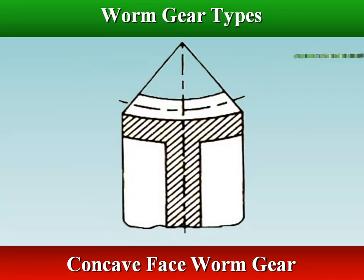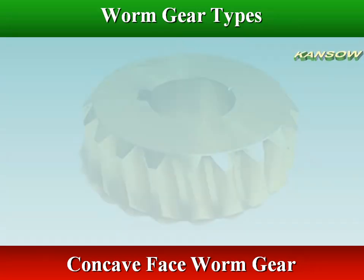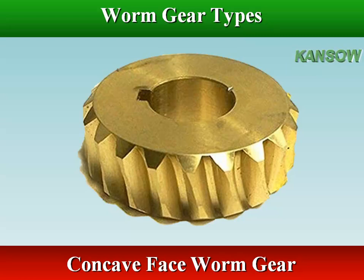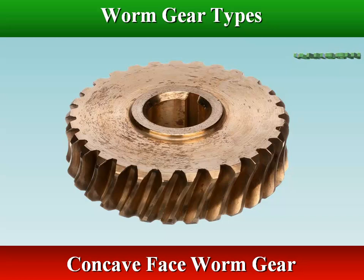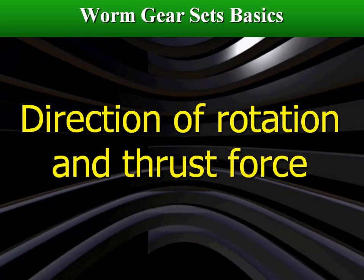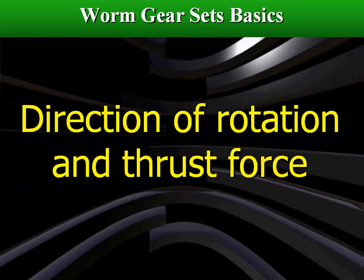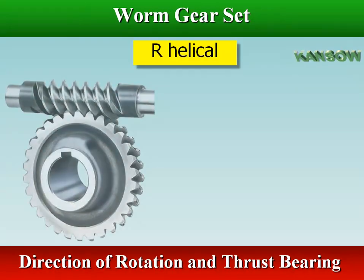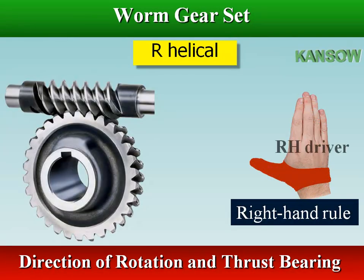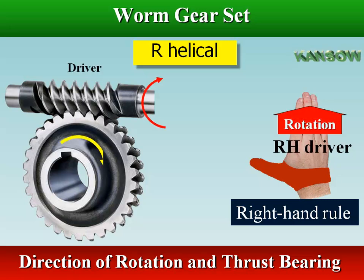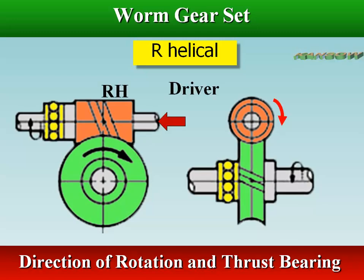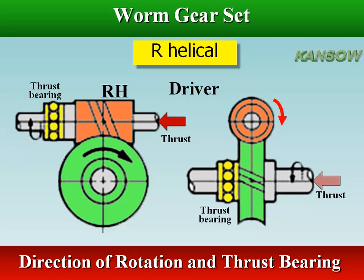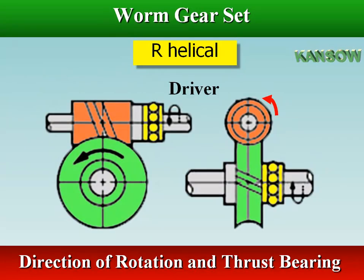The concave-face worm gear is the accepted standard form and is used for all heavy service and general industrial uses. The teeth are cut with a hob of the same pitch diameter as the mating worm to increase the contact area. Because of the helix of the gear teeth, worms and worm wheels produce axial thrust forces; the directions of thrust depend on the hand of the helix and the direction of rotation, and bearings must be selected properly to handle these thrust forces.